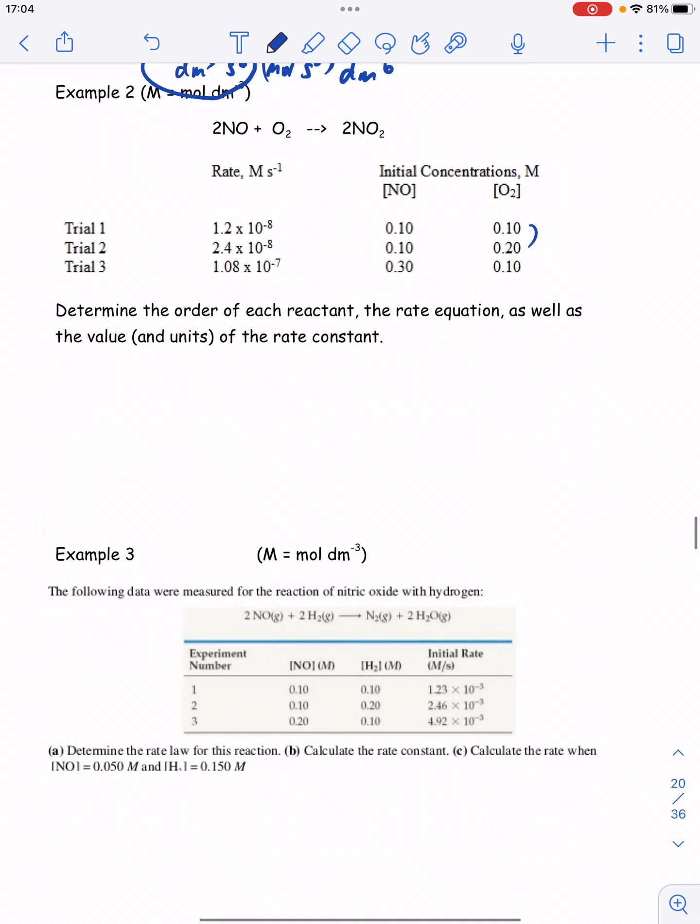So I can see oxygen's being doubled while this is being held constant. And if I look at the rate, it's been doubled. That's a first order. If I look at trials 1 to 3, I see that oxygen's staying the same, and NO is being tripled. And then I look over here.